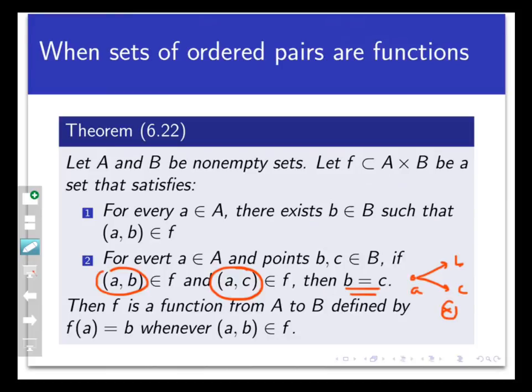So if those two properties are met, we know that that set of ordered pairs, which is just a random set of ordered pairs, actually defines a function from A to B.